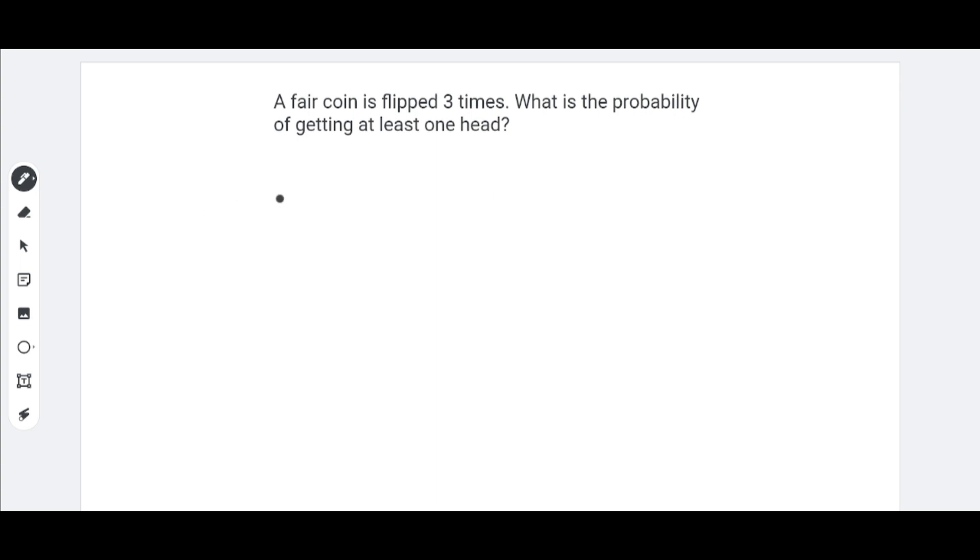So, when we flip a coin once, the probability of getting a head is 1 half. Now, let's see the probability of getting all tails when we do 3 times. This is the counter probability of getting at least 1 head. So, that would be 1 half to the power of 3, which would equal 1 eighth.